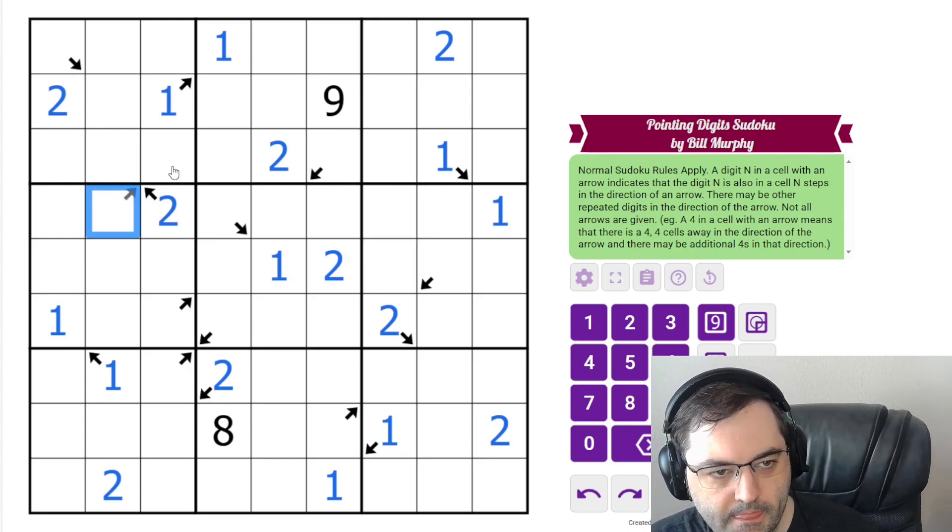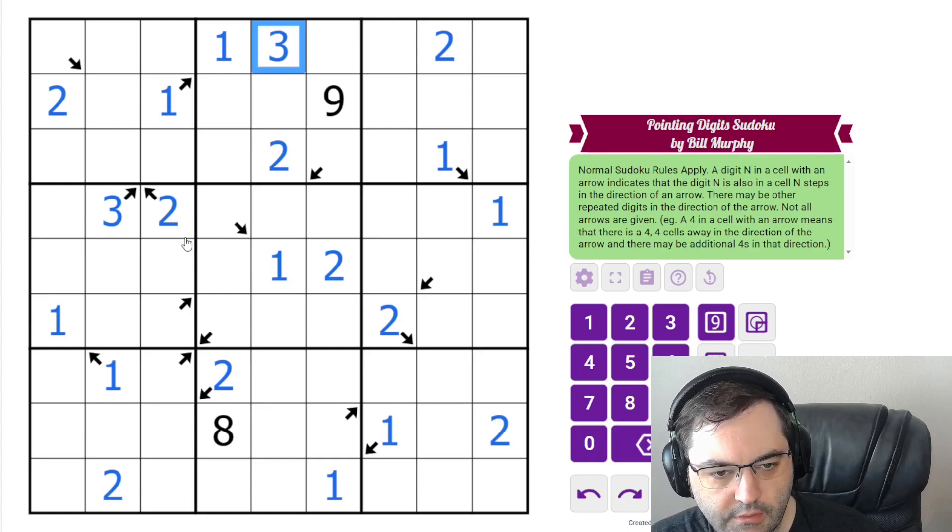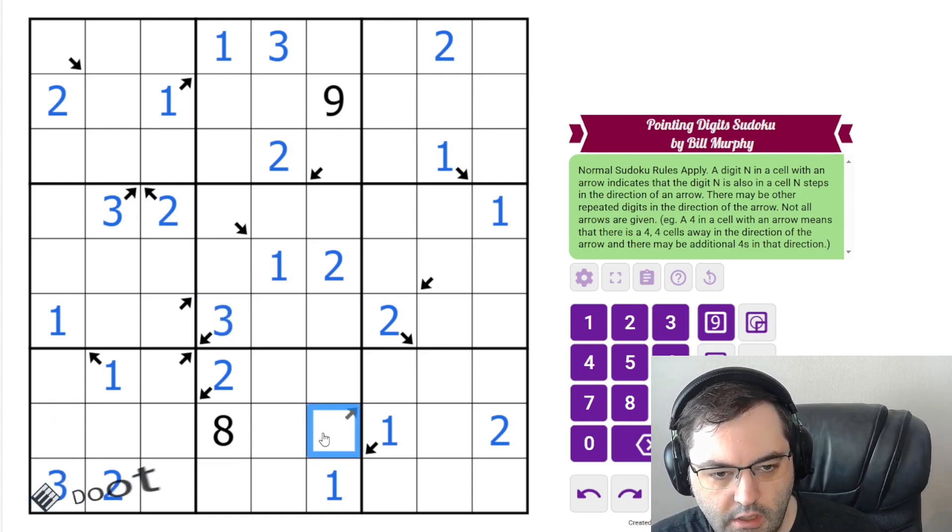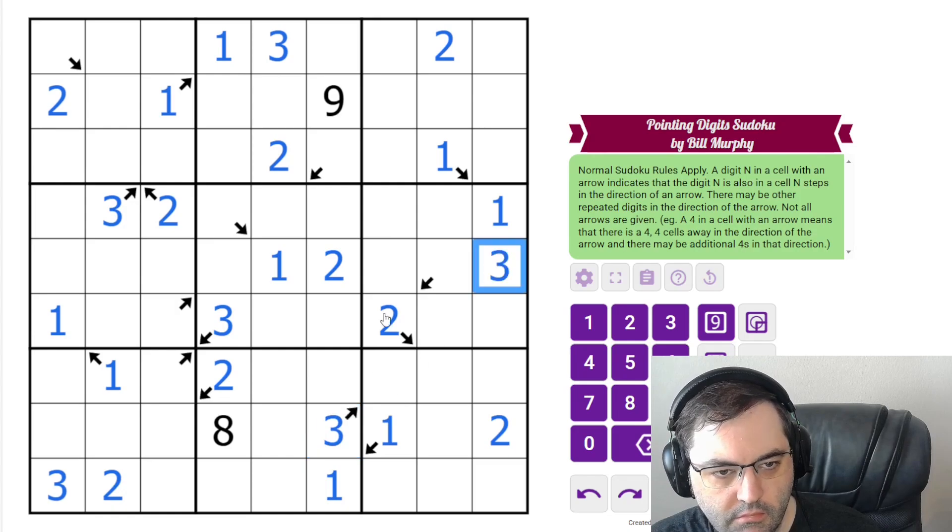All right, this one now, it could be one, two, or three, but we've already got one and two taken care of. So this is three with a three, three cells away. This one also is three with a three. And this one. Am I missing any threes? I don't think so.